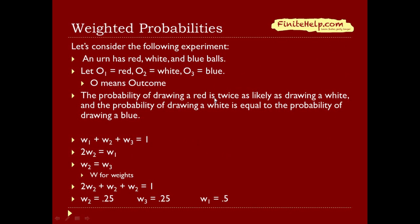The probability of drawing a red is twice as likely as drawing white, and the probability of drawing white is equal to the probability of drawing a blue. So how do we solve that?